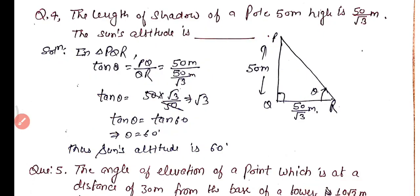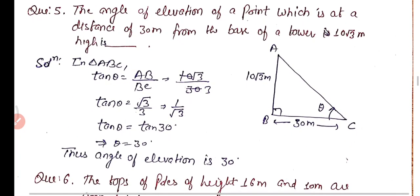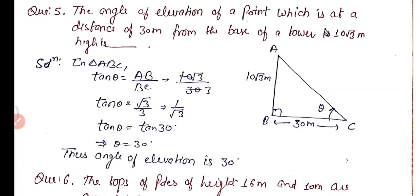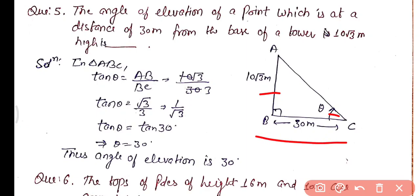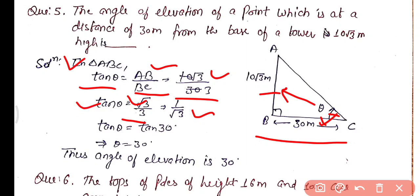Question number 5: The angle of elevation of a point which is at a distance of 30 meter from the base of a tower 10√3 meter high. In triangle ABC, tan θ = AB/BC = 10√3/30 = √3/3 = 1/√3. Since tan 30° = 1/√3, we get θ = 30°. So the angle of elevation is 30°.